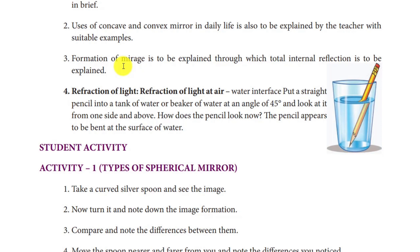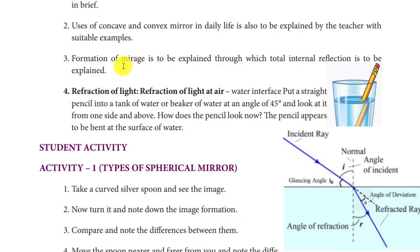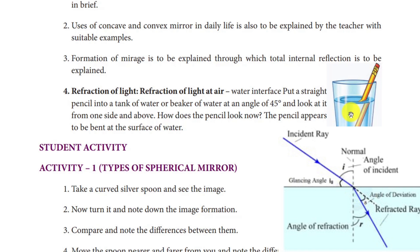The fourth point is refraction of light. When a pencil is placed in a glass of water, the pencil appears bent. This is because light enters from air into water, deviating from its straight-line path. This bending effect is called refraction.